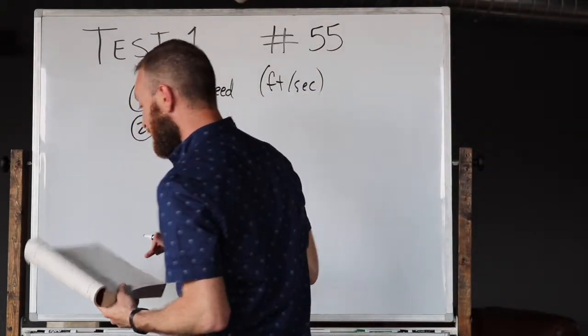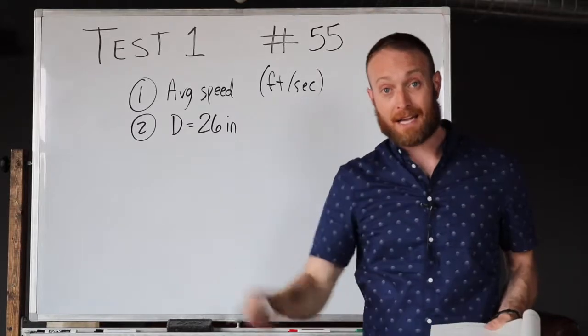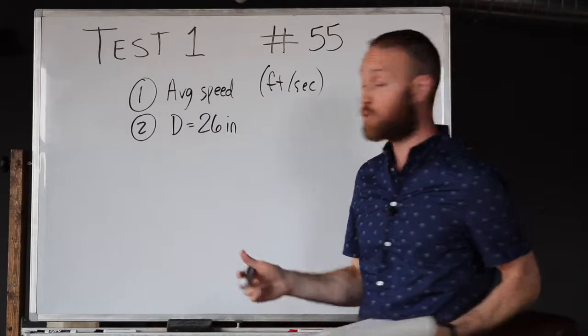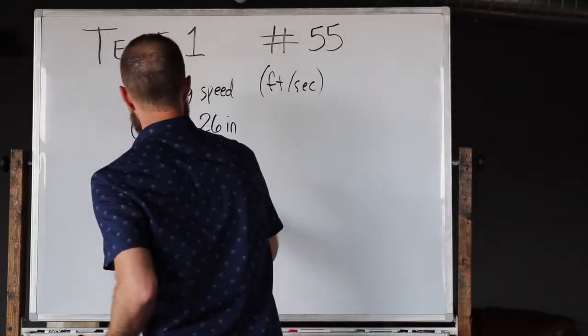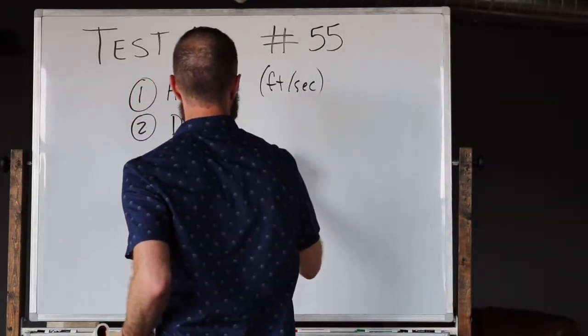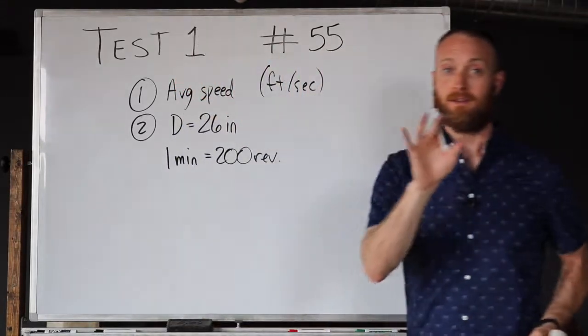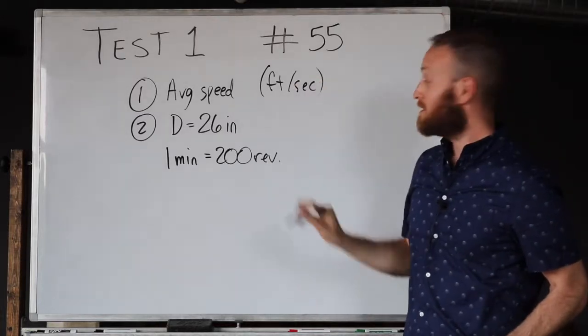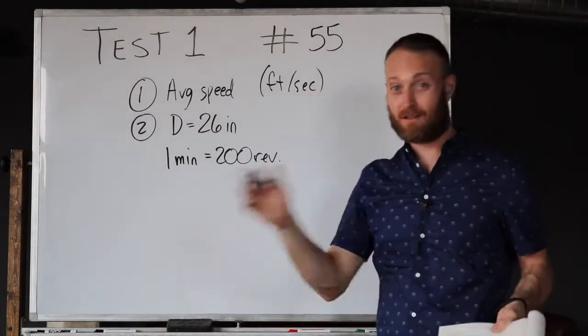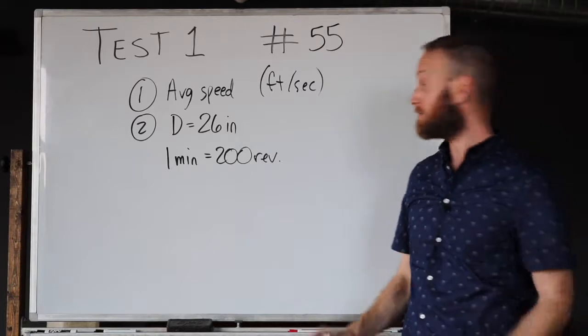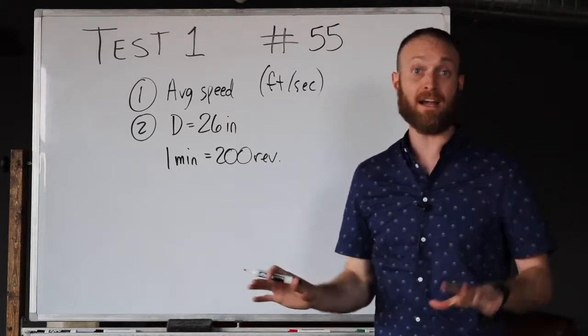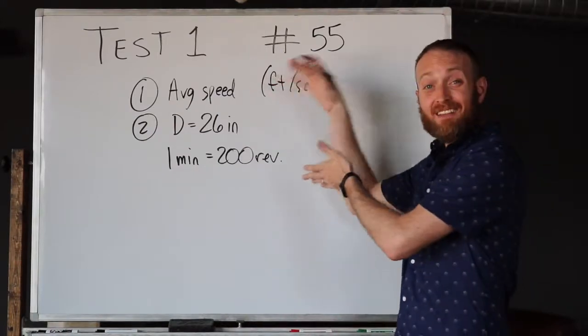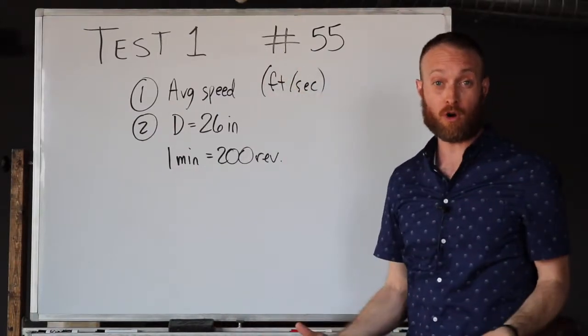We know that during one minute of riding, the bicycle wheels revolve or go around 200 times. So in one minute there are 200 revolutions. Again, minutes instead of seconds, so we've got a double conversion thing happening here that's going to be a little hairy, so we need to pay attention to this.